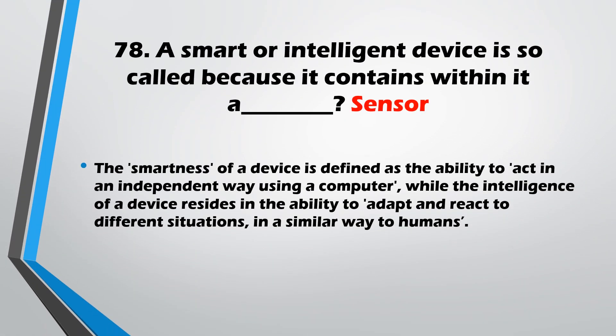Question No. 78: A smart and intelligent device is so called because it contains within it a sensor. A smart and intelligent device has a sensor found within it.